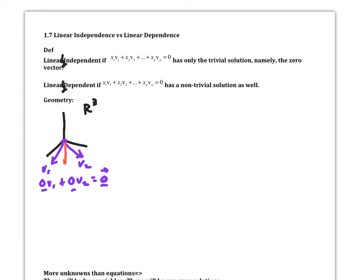In R3, if I add another vector V3 that is also in the plane of V1 and V2 — the span of V1 and V2 — are we linearly independent with those three vectors? No, because I can take a multiple of V1 and a multiple of V2 and get V3. So I can do a linear combination of V1 and V2 to get V3, which means I can get the zero vector. If the three are in the same plane, I will not have linear independence.